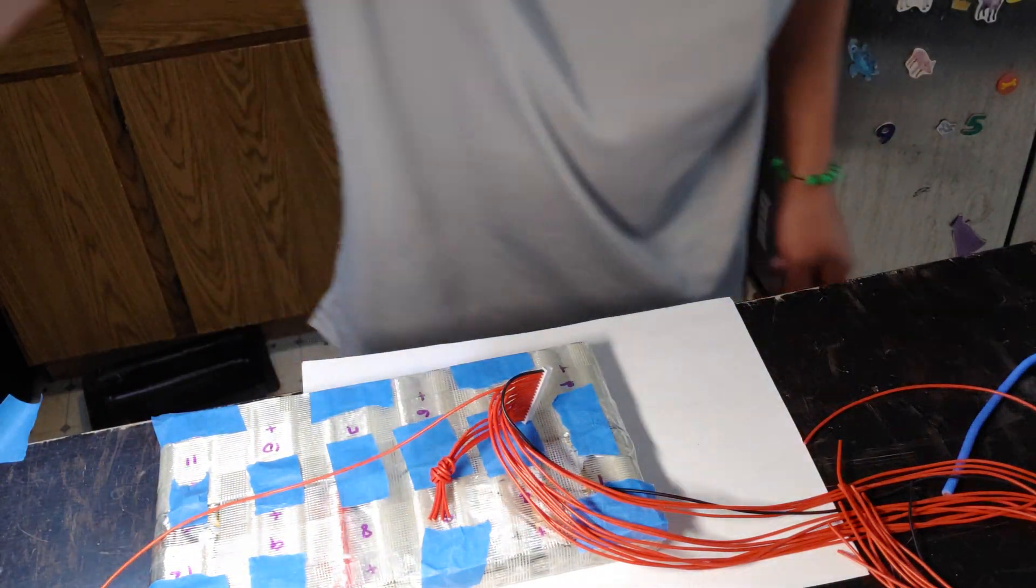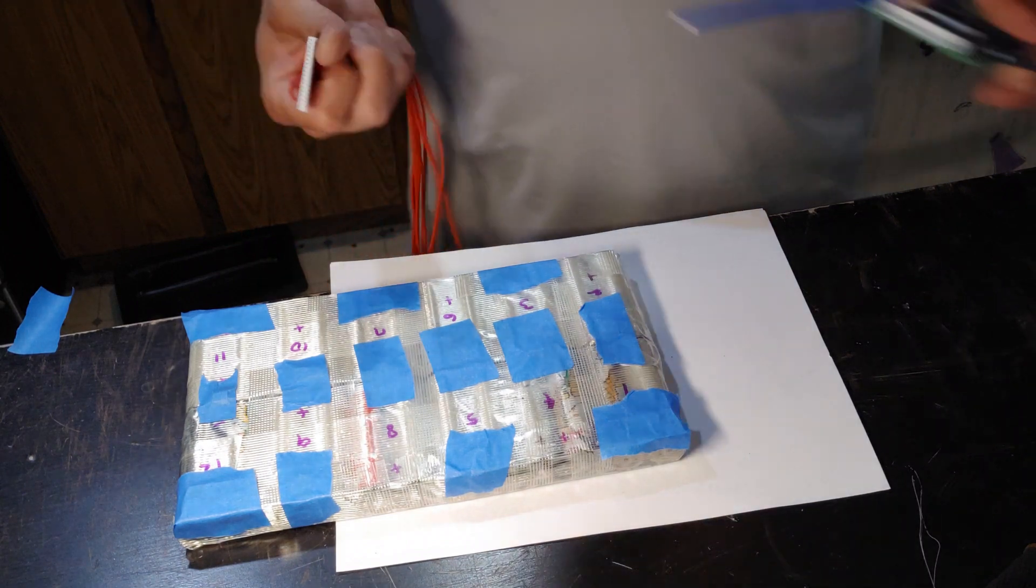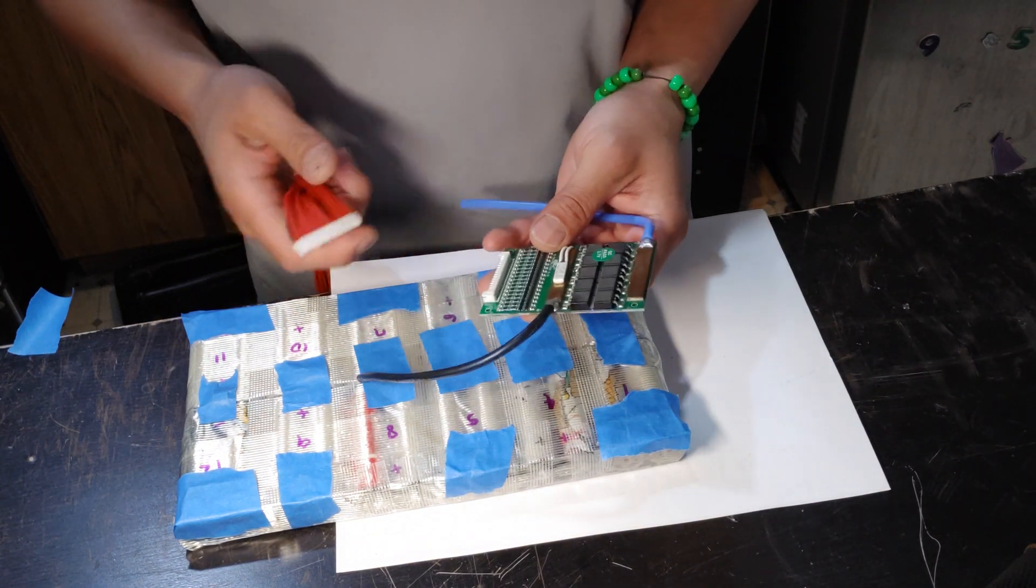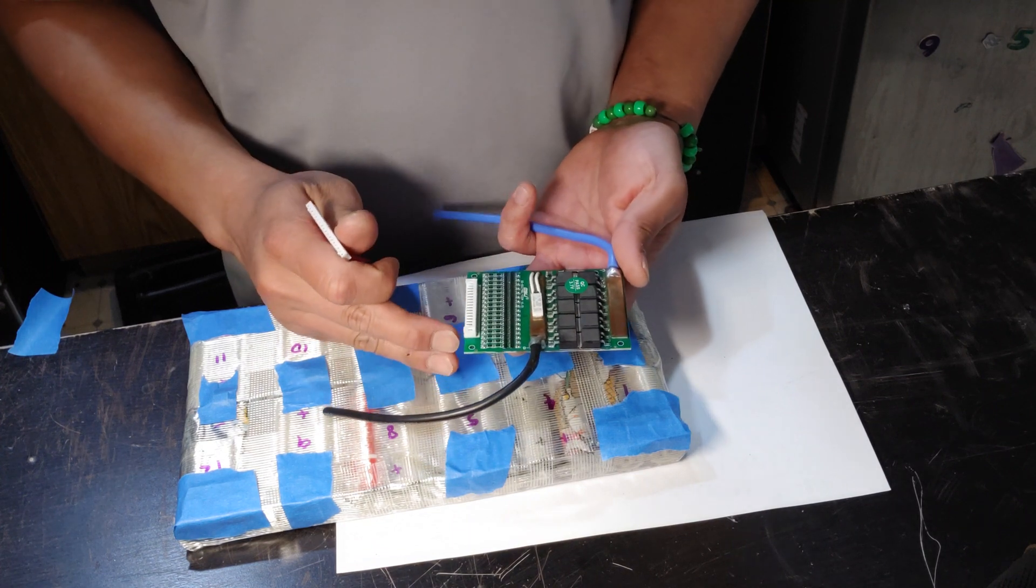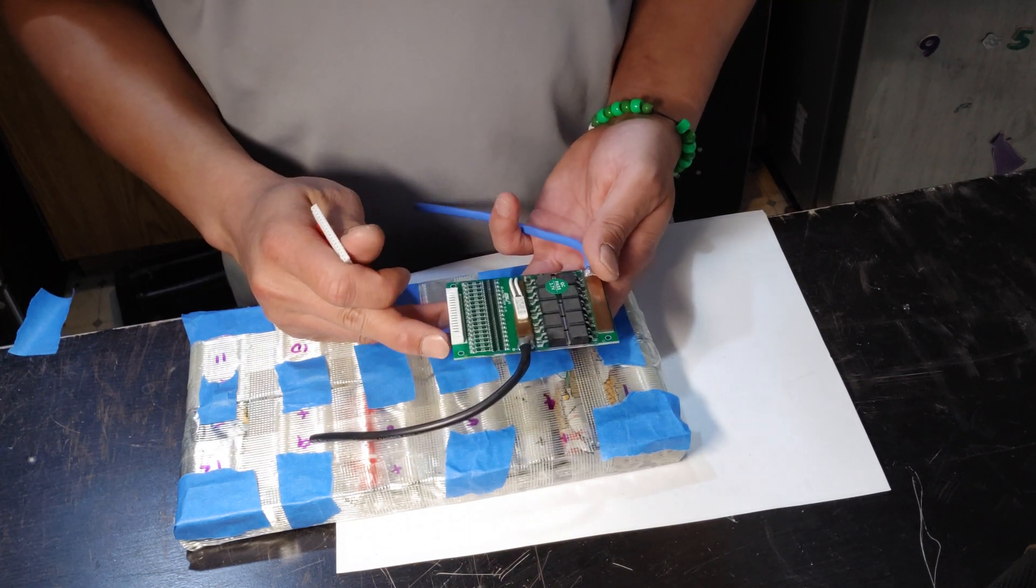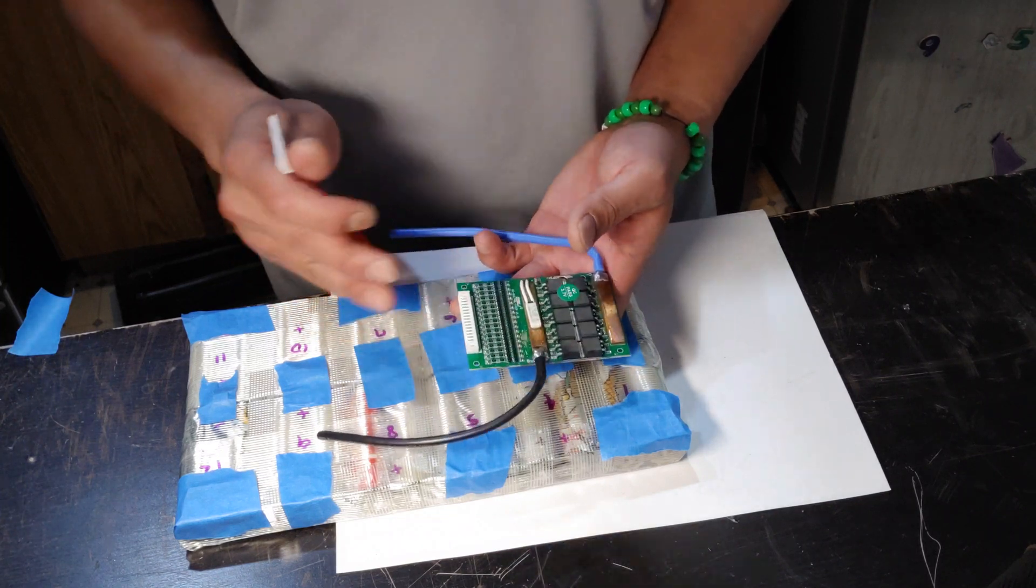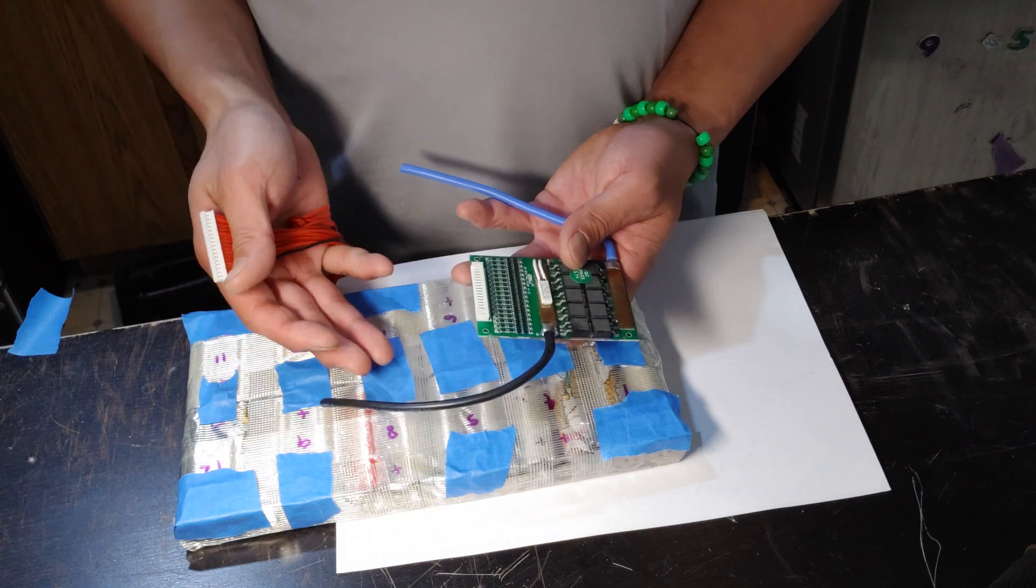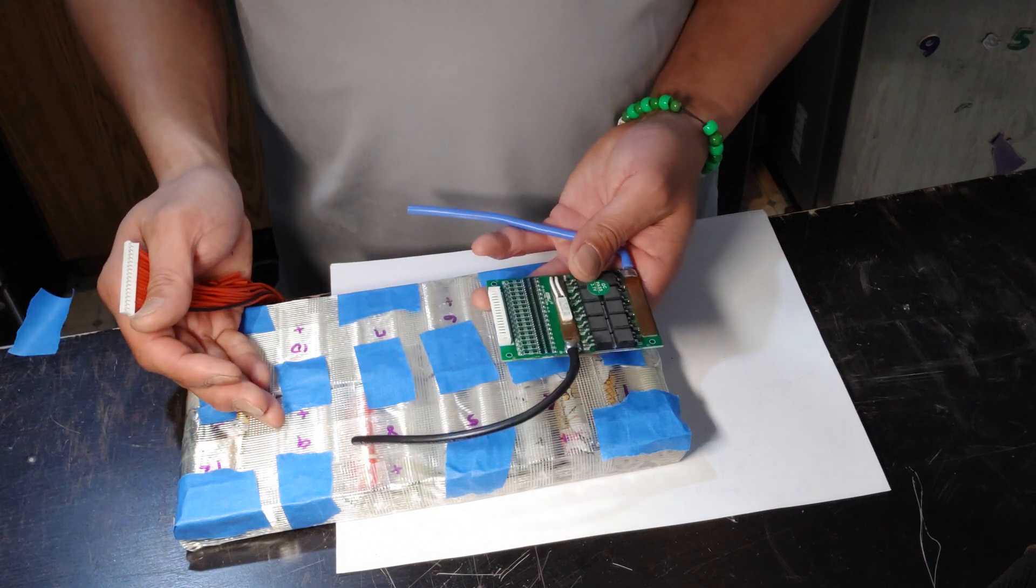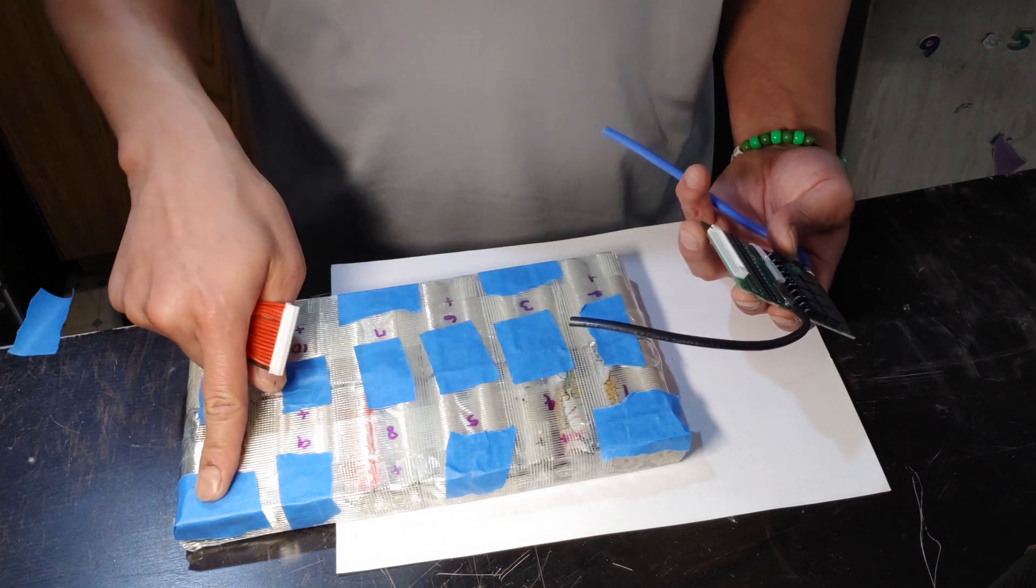Hi guys, in this next section we're going to do the BMS. You can get this on eBay, this is a pretty good BMS. I'm going to be bypassing the BMS for discharge, which means when I'm actually riding the electric skateboard, the power is going to come straight from the negative and the positive.